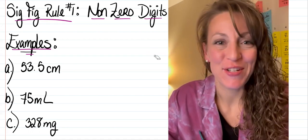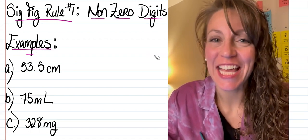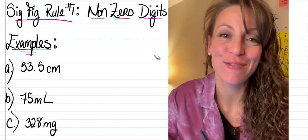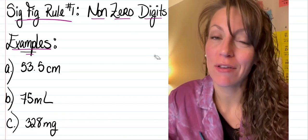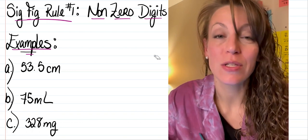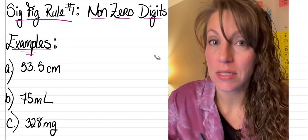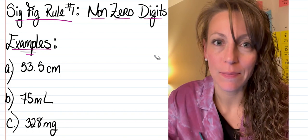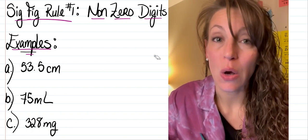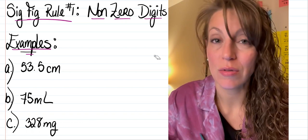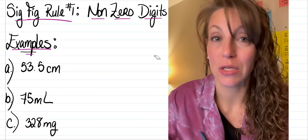Welcome. Let's do some chemistry. In particular, I'd like to take a look at how you determine the number of sig figs for a particular measurement. We're going to take a look at the easiest significant figure rule there is, which simply states that non-zero digits are always significant. So any number in a measurement that's not zero is always going to count towards your total number of significant figures for that particular measurement.